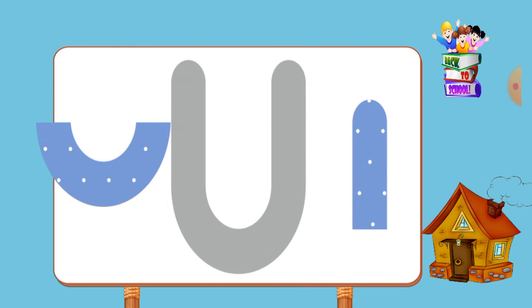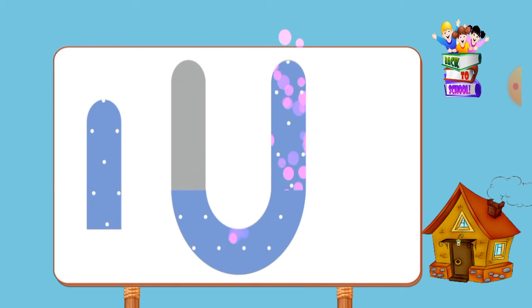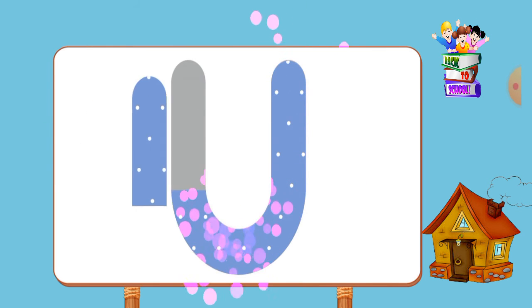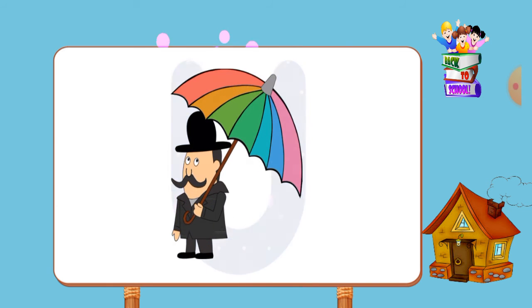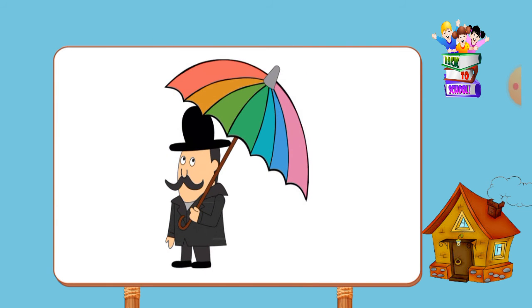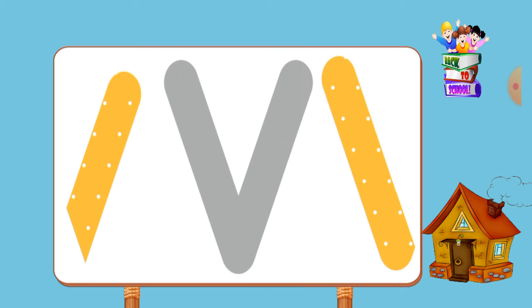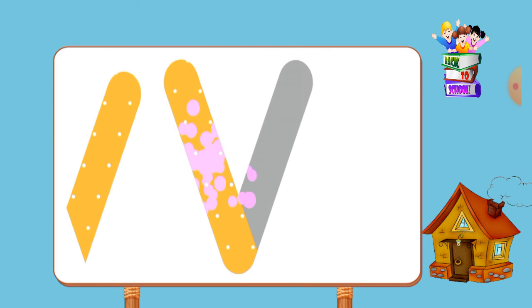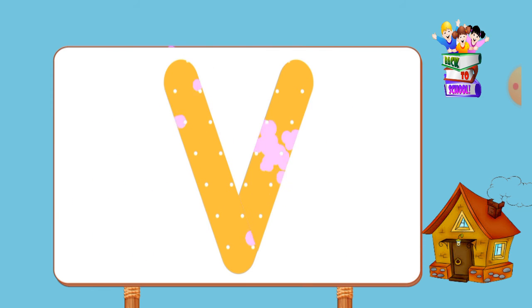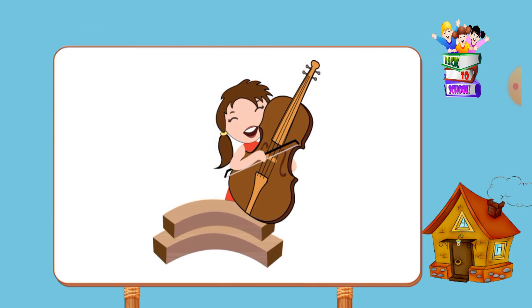Match the pictures to their shadows. U, u, umbrella. Match the pictures to their shadows. V, v, violin.